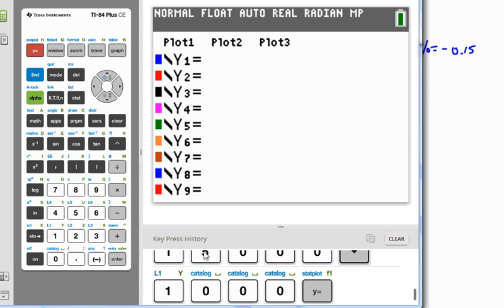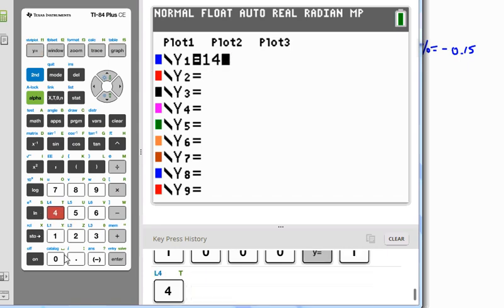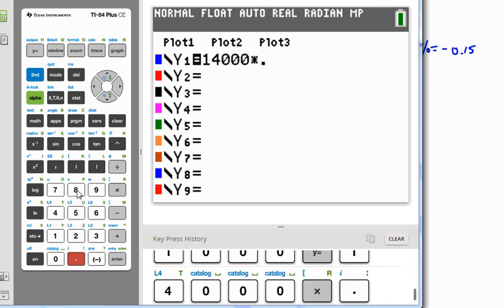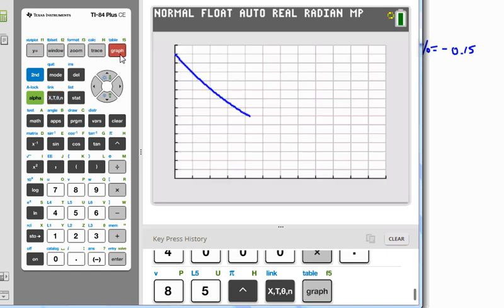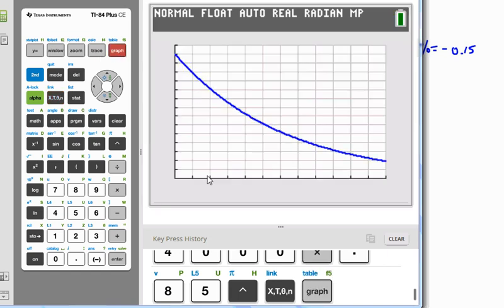So let's go to the calculator. And we put in 14,000 times 0.85 to the power of x. And we're interested in three years, I set up the graph, so we can see after three years what is going to be the value of the car. This is 15,000, 14,000 is where it starts.